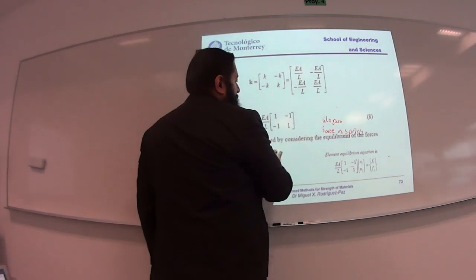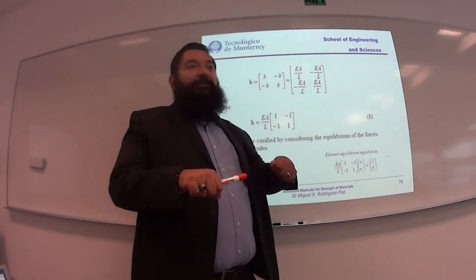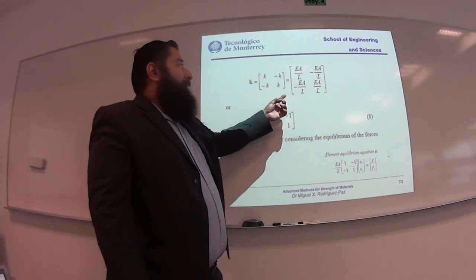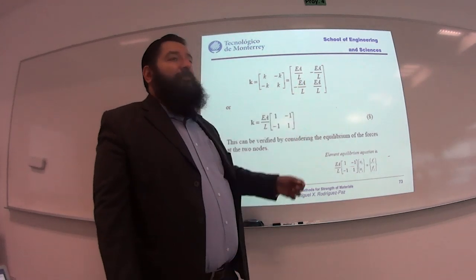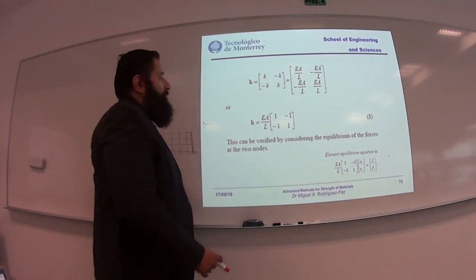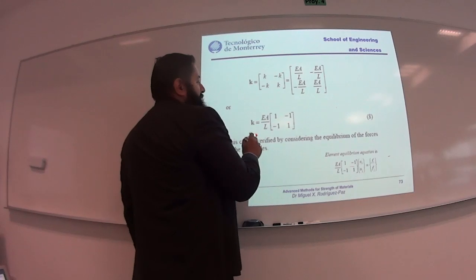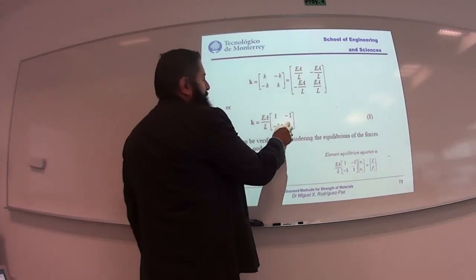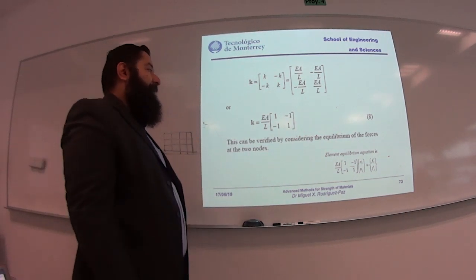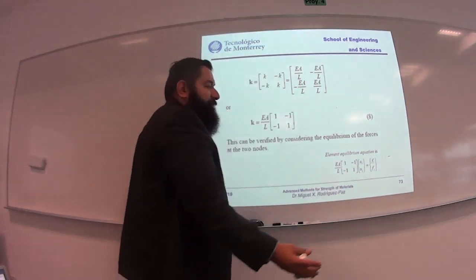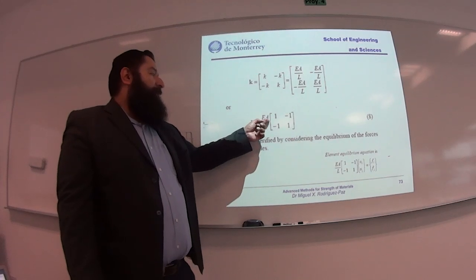Assuming linear static behavior, the bar element from mechanics of materials under axial loading behaves like a spring with spring constant k = EA/L. The stiffness matrix for one bar element is EA/L multiplied by the matrix [1, -1; -1, 1]. The element equilibrium equation is very analogous to what we did with springs. Any questions so far?